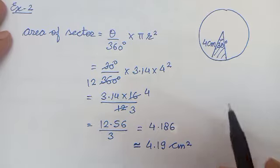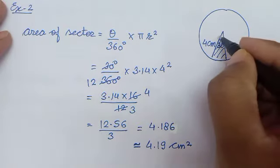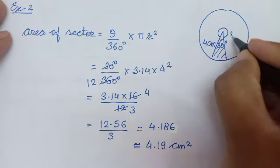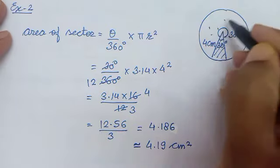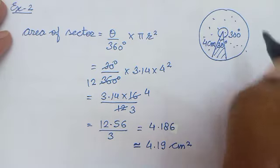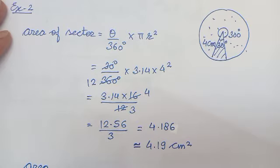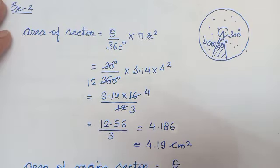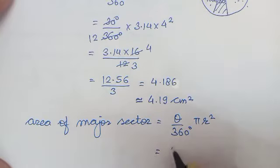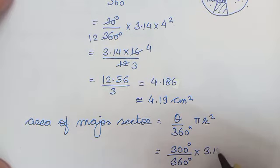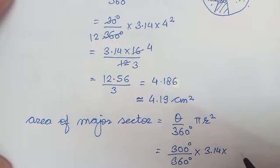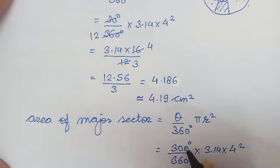Also we have to find the corresponding major sector. तो major sector के लिए अगर यह 30 degree है तो जितना angle बच गया है वह 330 degree है — there is a mistake here, if the angle is 30 degree then the remaining angle will be 330 degree. Area of major sector is theta by 360 into pi r square, so participation is 330 degree.